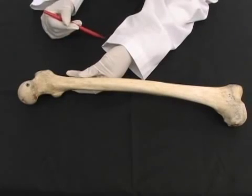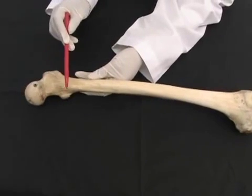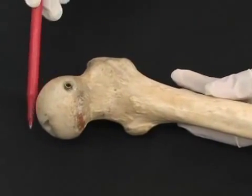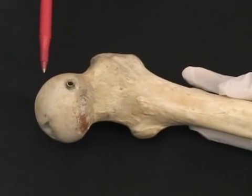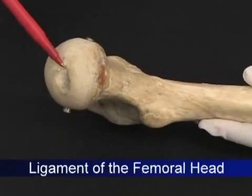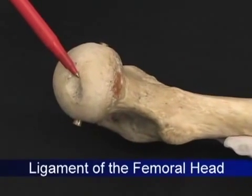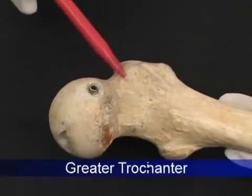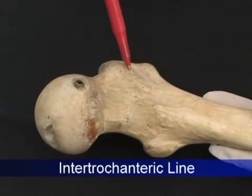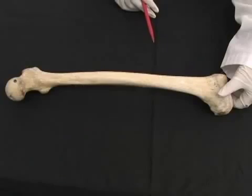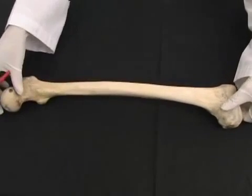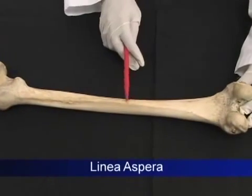The femur is the longest bone of the body. This is the proximal end of the femur. This is the head, which fits inside the acetabulum cavity to form the hip joint. There is a fovea, or pit, where the ligament of the femoral head inserts. This is the neck, greater trochanter, lesser trochanter, and intertrochanteric line.